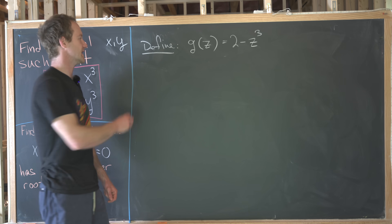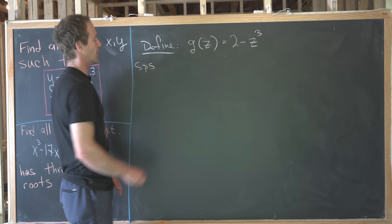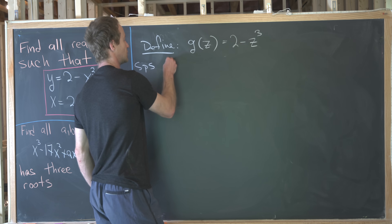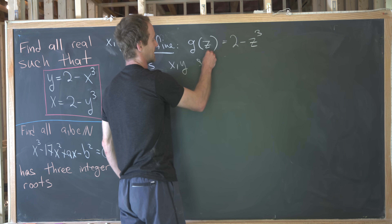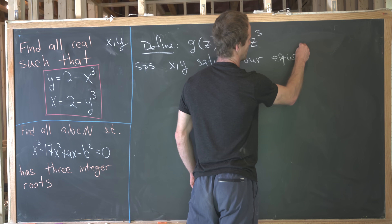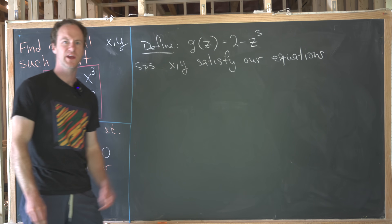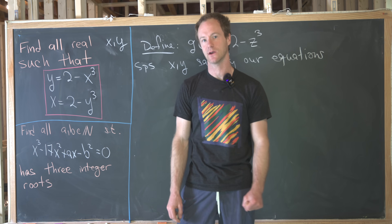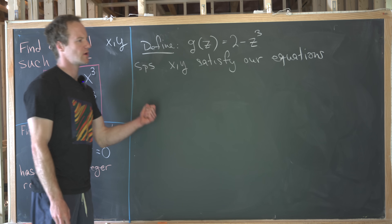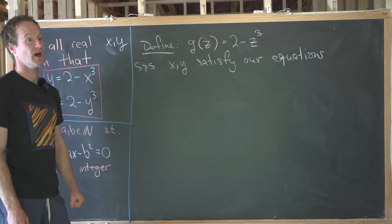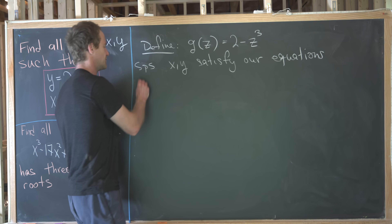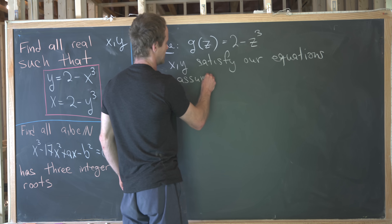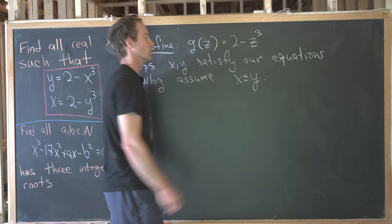Next up, suppose that we've got x and y satisfying our system of equations. Furthermore, we can put them in some sort of order because of the symmetry between x and y. So without loss of generality, let's assume that x is less than or equal to y.